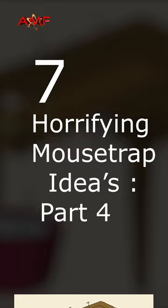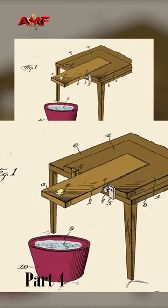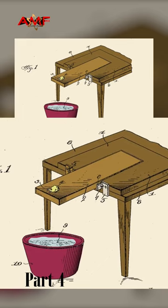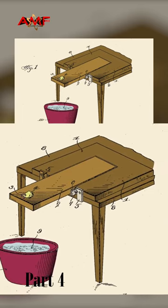7 Horrifying Mousetrap Ideas, Part 4. Force mice to walk the plank. It looks like fun until you die. How? The idea is to lure a mouse or rat onto a ledge using a piece of cheese. Then gravity lets the ledge snap loose, throwing the animal into a watery grave where, presumably, it can't survive.